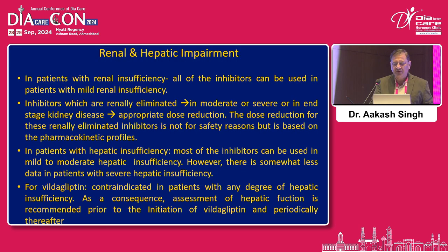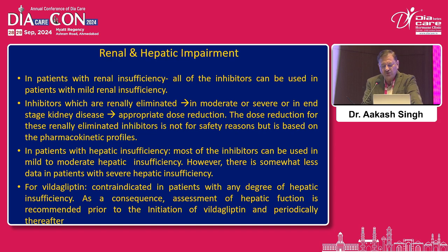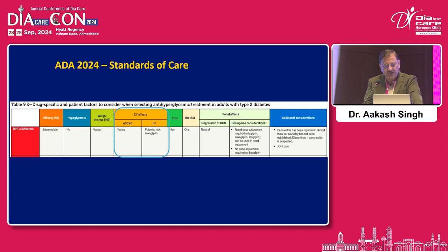As far as renal and hepatic impairment is concerned, all DPP-4 inhibitors can be used in patients with mild renal insufficiency. Patients with more significant renal impairment will require dose adjustment, and some agents like linagliptin will not require dose adjustment. In patients with hepatic insufficiency, most inhibitors can be used in mild to moderate hepatic insufficiency. However, there is less data in patients with severe hepatic insufficiency. Vildagliptin is contraindicated in patients with hepatic insufficiency.